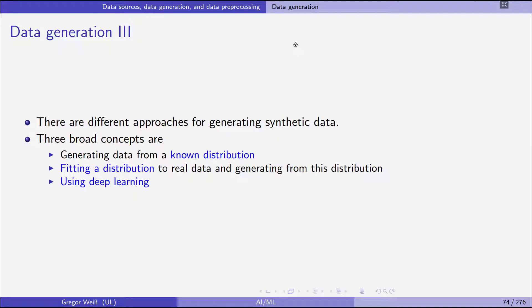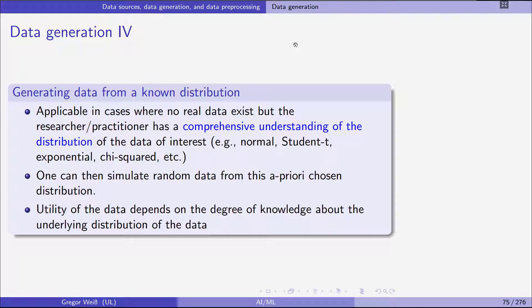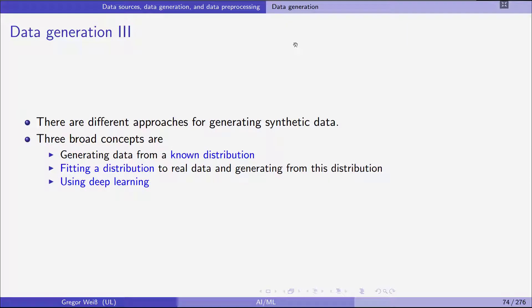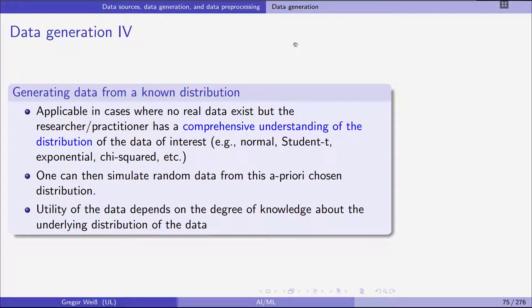How should we generate synthetic data? Now, we have three broad concepts, generating data from a known distribution, fitting a distribution to real data, and then simulating from that distribution and using deep learning. So what do we do in the first case? Well, actually, you simply take a statistical distribution, you simply assume that the data comes, for example, from a student t exponential or normal distribution, and then you simulate random data from this a priori chosen distribution. The difference later on to the second method, where we fit a distribution to real data, is actually that you simply assume the distribution and you assume it to be known. You make an assumption, for example, a normal distribution with mean 2 and standard deviation 5. This is an assumption that is not validated by any estimation, by any look at the real data.